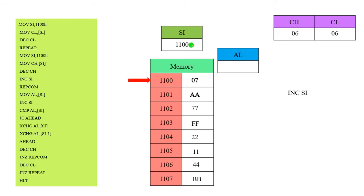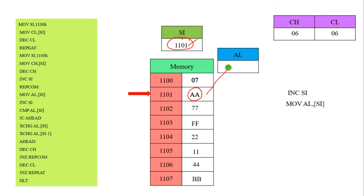Now the increment of the SI value makes the pointer 1101. The pointer is now located at memory location 1101. This memory location contains the value AA. The next necessity step: MOV AL, [SI]. This memory location contains AA, and this AA value is moved into the AL register. Then we again increment the SI.